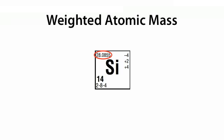Does this mean silicon has a fraction of a proton or a fraction of a neutron hiding somewhere? No, that's not the case. It's impossible to have fractions of protons, neutrons, or electrons. So where does this .0855 come from? Let's find that out.